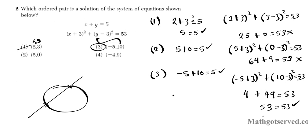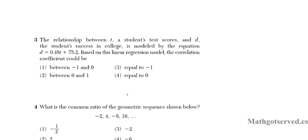Let's go ahead and take a look at question number 3. Question 3 says the relationship between t, a student's test scores, and d, the student's success in college is modeled by the equation d equals 0.48t plus 75.2. In this problem, I want you to just think about your basic y equals mx plus b equation.